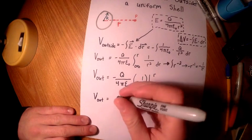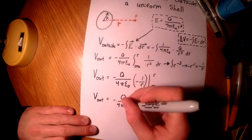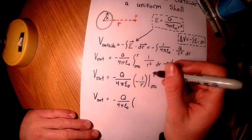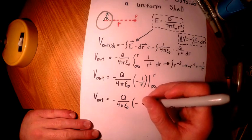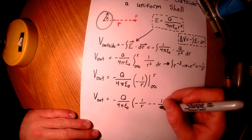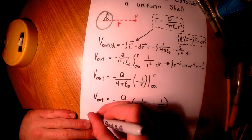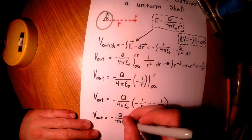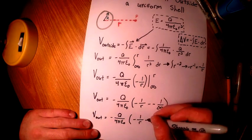Carrying down our constants again and evaluating the integral, we get negative 1 over r minus a negative 1 over infinity. Subtracting a negative is really just adding, and evaluating at infinity gives us 0. So that leaves us with negative 1 over r plus 0.